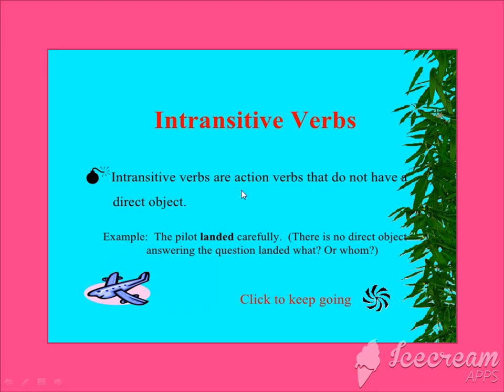Intransitive verbs are action verbs that do not have a direct object. In yesterday's class, we thoroughly saw that transitive verbs are verbs which have a direct object — they explain the work which is going to be done, when it will be done, how it will be done, and whom it will be done to.